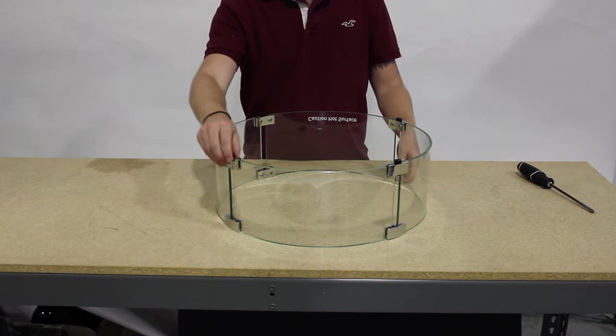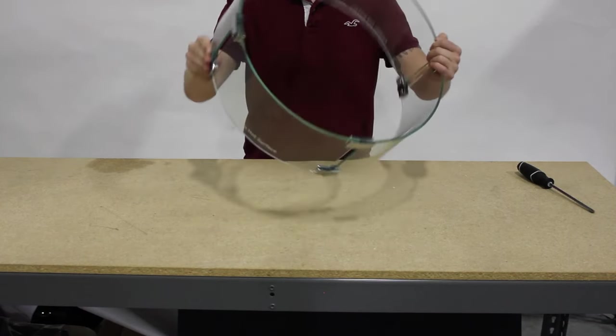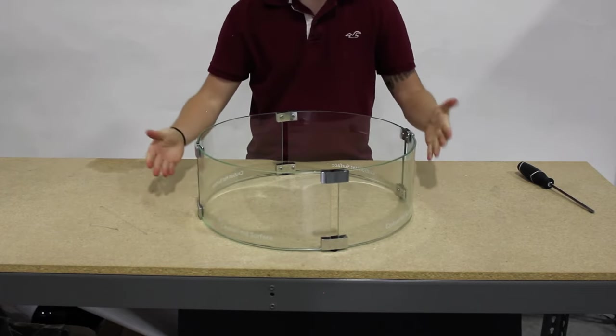After all screws have been tightened, you may lift the flame guard and turn it right side up, with the feet on the flat surface.